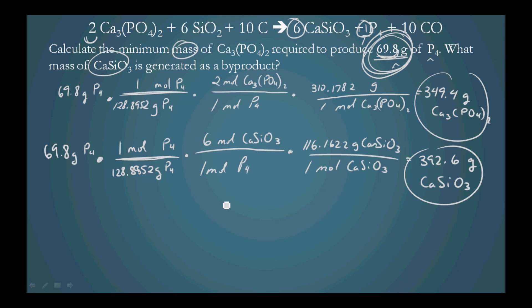So let's call this A and this B. So for A, we can round down to 349 grams Ca3(PO4)2. And for B, we will round up to 393 grams CaSiO3.